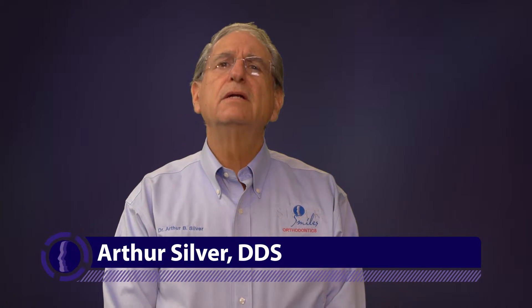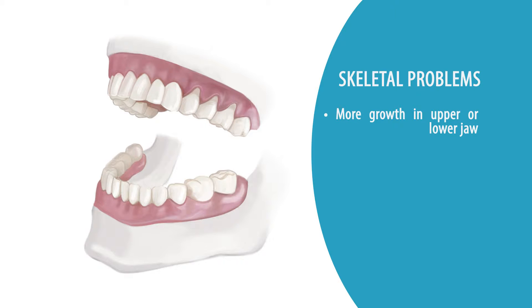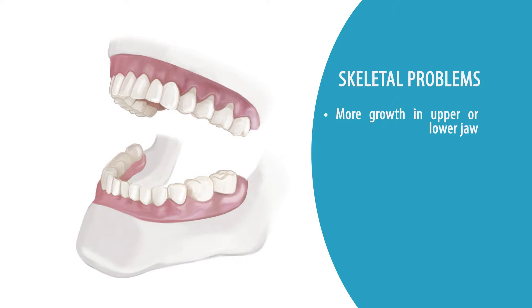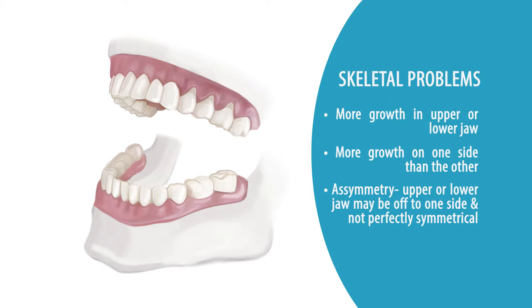We tend to think that orthodontics is primarily a problem with positions of teeth, but the reality is that very many of our patients also present a skeletal problem that causes the teeth not to fit. When we say a skeletal problem, that could mean many things. You could have more growth in the upper jaw or more growth in the lower jaw, even side to side. Some people have more growth on one side and less growth on the other, which can create asymmetry — meaning the upper or lower jaw may be off to one side and not perfectly symmetrical.